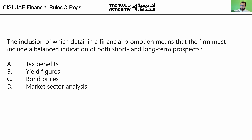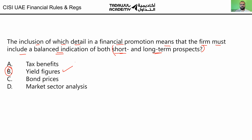Chapter six, question number one: the inclusion of which detail in the financial promotion means that the firm must include a balanced indication of both short and long-term prospects? In the promotion, you should inform clients of the short and long-term prospects of yield. Half of you got it right, the other half got it wrong. There are many details to include in a promotion, but when talking about short-term and long-term prospects, we are specifically talking about the yield.